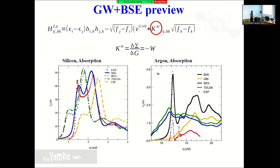You put the quasi-particle energy and the kernel inside a new Dyson equation and end up with a new description of macroscopic screening which captures excitonic effects. In the case of solid argon, the red dots are experimental data — there is a very sharp peak which is an excitonic peak, completely missing at the RPA blue line or TDDFT level within the adiabatic LDA. But when you add the electron interaction piece of the kernel, you get this very sharp excitonic peak.